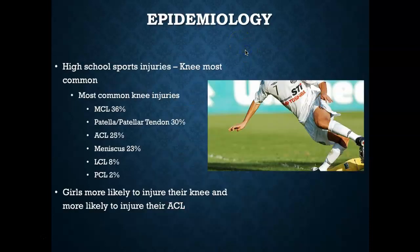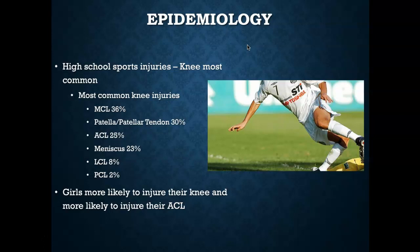Unlike the ankle joint, which is the most commonly reported injury across all sports in the United States, when we look at knee epidemiology, the knee is the most common injury encountered in the high school setting. If you are an aspiring high school athletic trainer, most often you're going to see knee pathologies come into your clinic. The most common types of knee injuries at the high school level are evidence-based statistics.